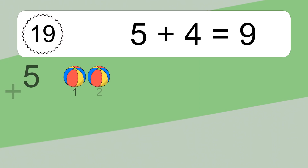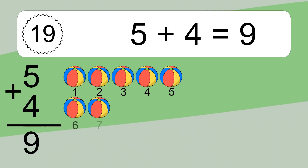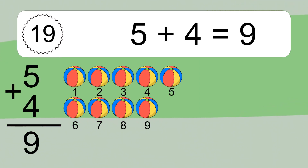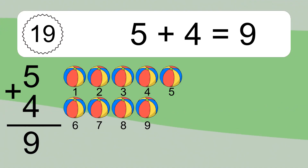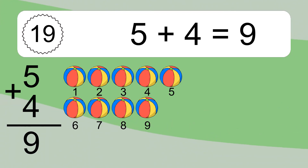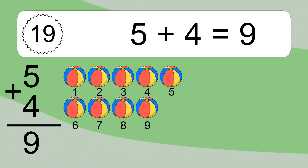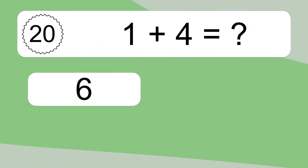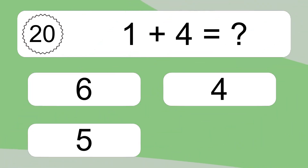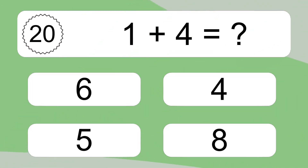5 plus 4 equals 9. Let's count it: 1, 2, 3, 4, 5, 6, 7, 8, 9. Let's count it: 1, 2, 3, 4, 5, 6, 8, 9.